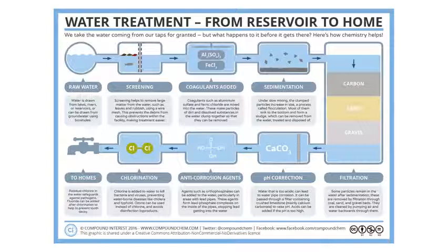Anti-corrosion agents — phosphate-containing compounds — are added to help prevent lead from leaching into the water. Then the water is chlorinated to kill bacteria and viruses and prevent waterborne diseases. After chlorination, it is piped out to residents' houses.